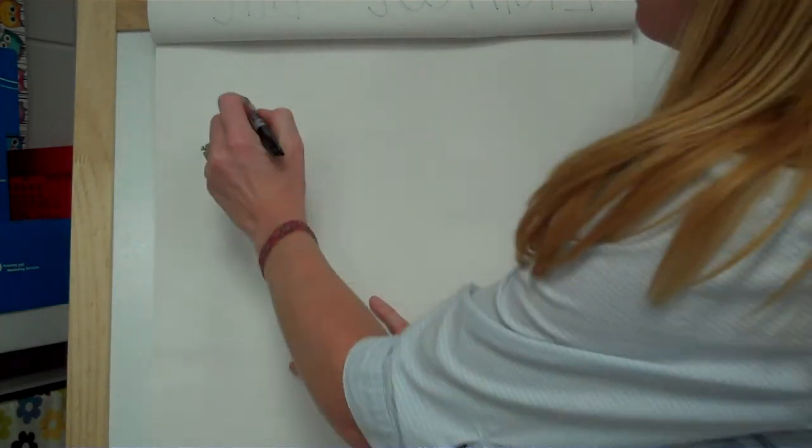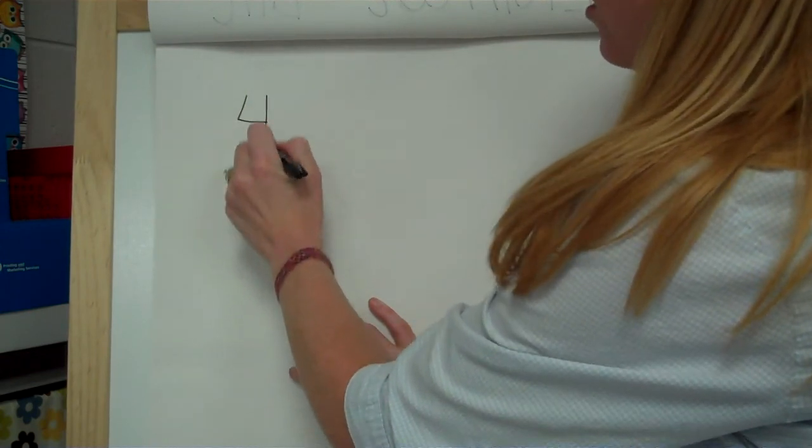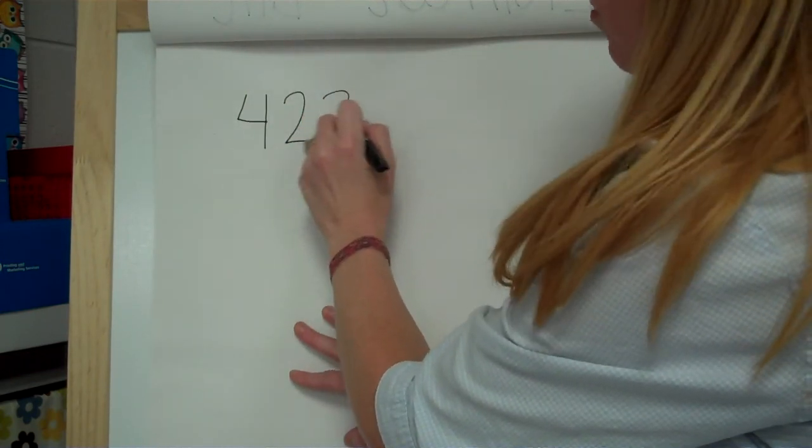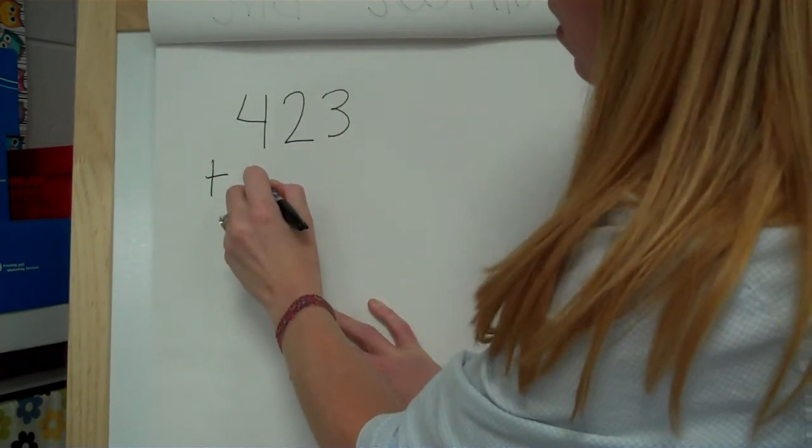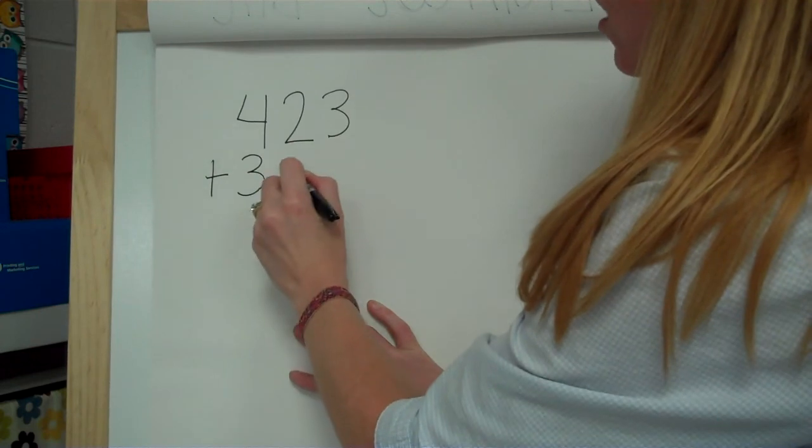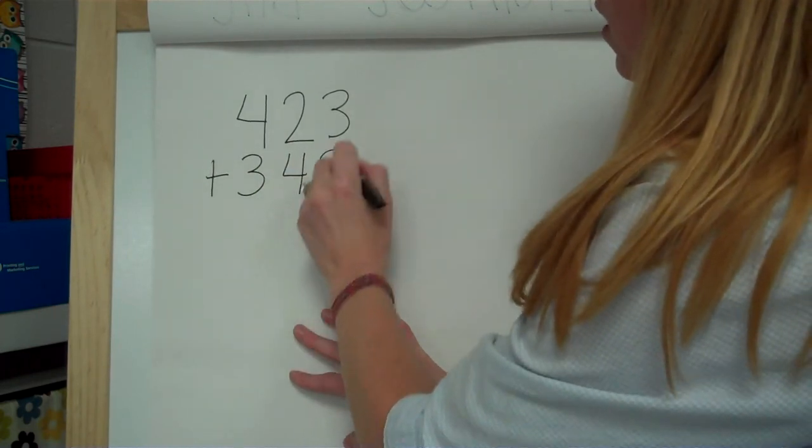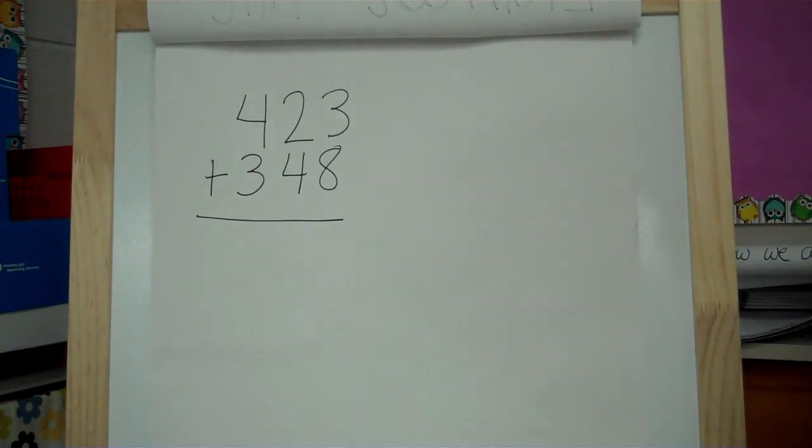Alright, so now we're going to do our last problem together. And this will be your homework problem to bring into math class tomorrow that we will check. Alright, so let's do, let's see, let's do 423 plus 348. Alright, so you are going to solve that one by breaking apart. Now even if you know how to add those numbers without breaking apart, I still want you for today to do this with breaking apart the strategy that we just learned. And then bring that in tomorrow and we will practice some more with it in class. See you then.